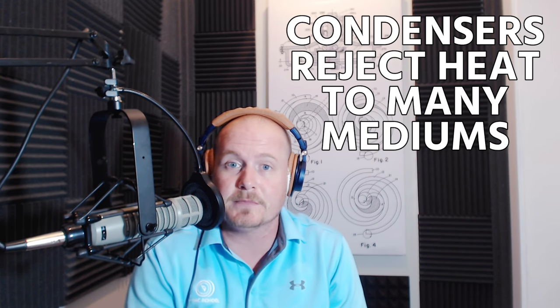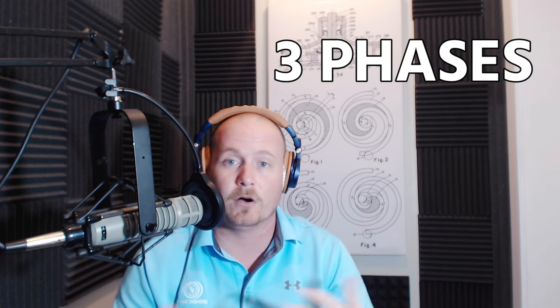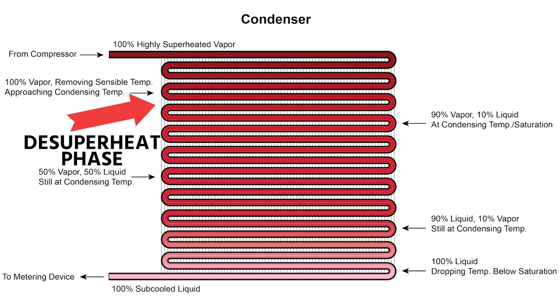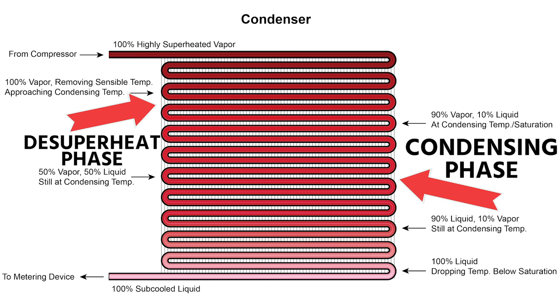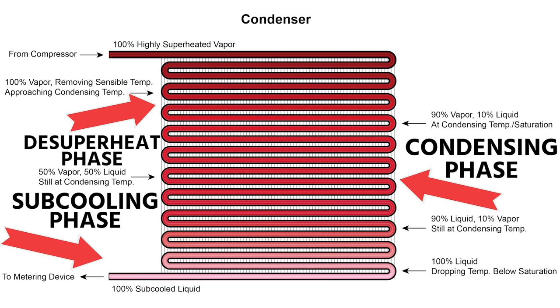Condensers can reject heat to many different types of mediums, but they are all heat rejecters and they all go through three phases: the desuperheating phase brings the refrigerant to the condensing temperature in that first portion at the top; the condensing phase runs through the bulk of the condenser; and the sub-cooling phase at the end drops the temperature below the saturation temperature. You can only have sub-cooling once the refrigerant is fully liquid, and you can only have superheat if it is fully vapor. It's like watching a boiling pot of water in reverse — changing from vapor to liquid instead of liquid to vapor. That's your condenser, the heat rejecter.